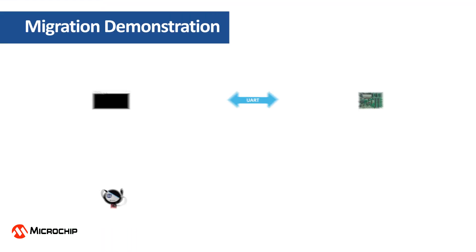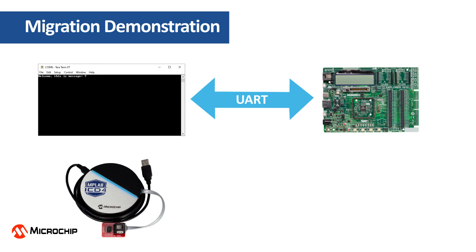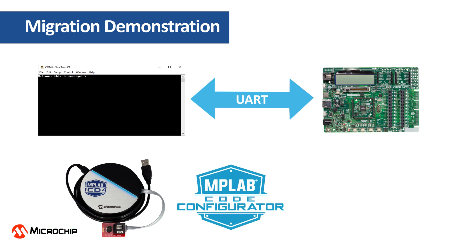We will now demonstrate the ease of migration from a PIC24F MCU to a dsPIC33 DSC using MPLAB Code Configurator and the associated application libraries. In this demo, we will create an example that uses the UART module to periodically transmit a message from a PIC24F MCU. We will then show the ease of migrating to a dsPIC33 DSC with almost no changes to the application layer using MCC, which abstracts hardware dependencies and simplifies the porting.